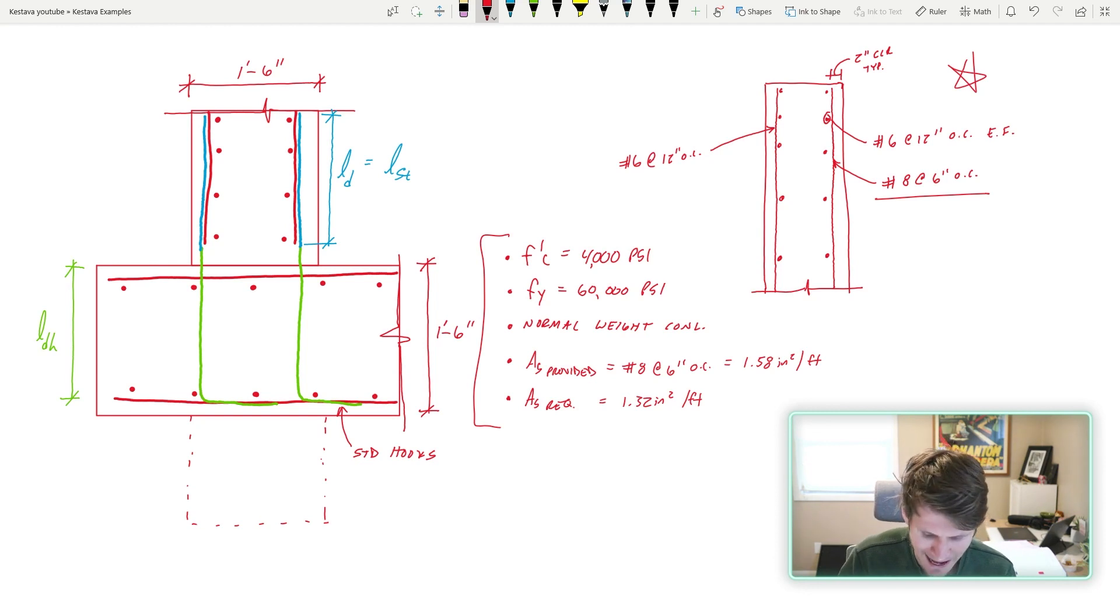We are going to add standard hooks at the end of our rebar development to help us out. You can do straight bar development or you can add hooks to the end. Thinking about it, when you add a hook to something when you're trying to embed it into something, it's going to be really hard to pull that thing out in comparison to if you stuck a straight stick in the ground.